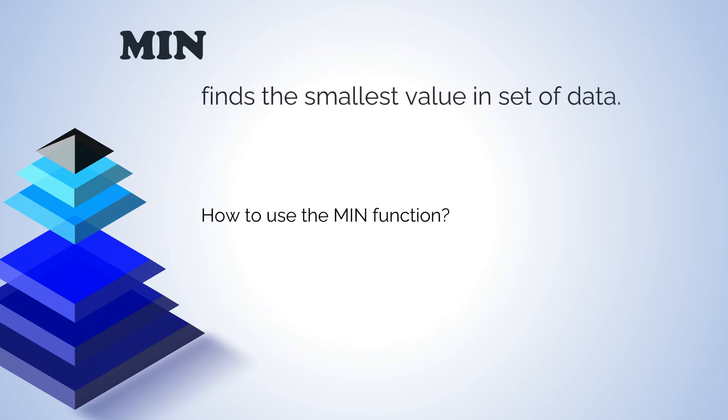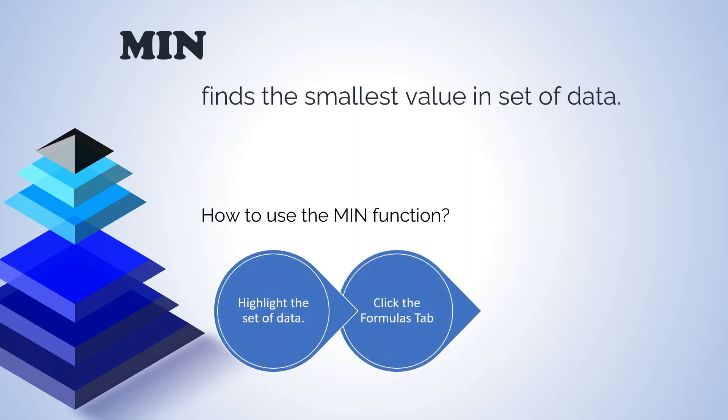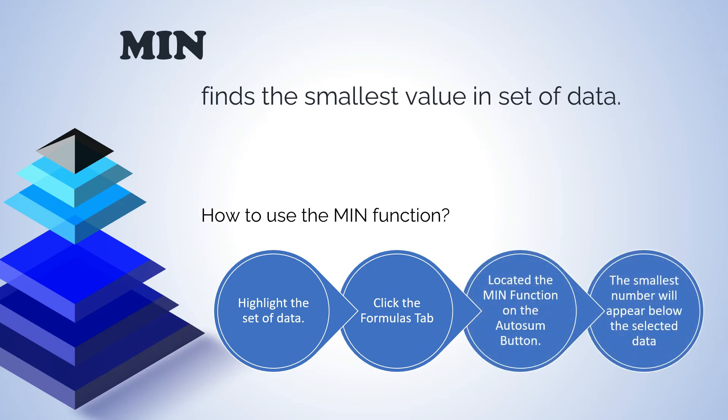Next is min function. It finds the smallest value in set of data. And the steps are. First, highlight the set of data. Then, click the formulas tab. Next, locate the min function on the auto sum button. Last, the smallest number will appear below the selected data.